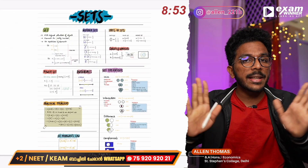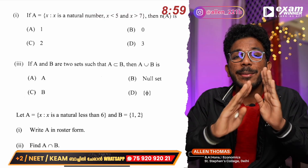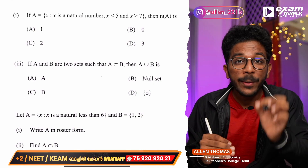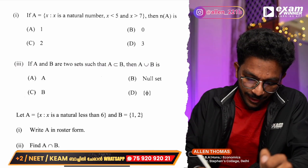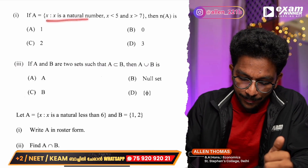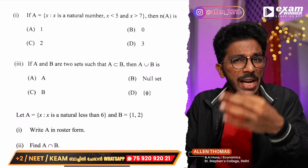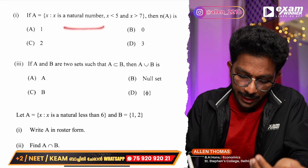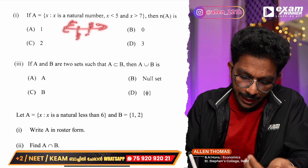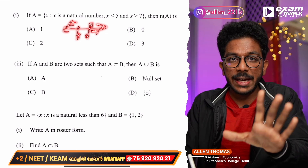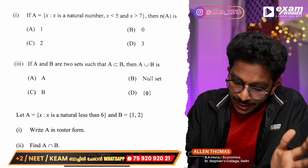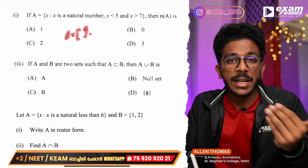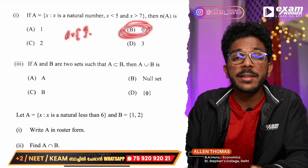We will discuss the theory in this chapter — where do you get the notes? Then we will discuss the theory in the correct way and the previous year's application. First solution: If A is a natural number less than 5 and greater than 7, there is no such number, so the number of elements in A is zero — it is an empty set.